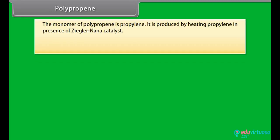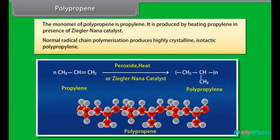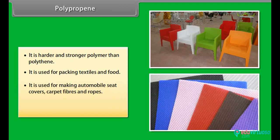Polypropene: the monomer of polypropene is propylene. It is produced by heating propylene in the presence of Ziegler-Natta catalyst. Normal radical chain polymerization produces highly crystalline isotactic polypropylene. It is a harder and stronger polymer than polythene. It is used for packing textiles and food, for making automobile seat covers, carpet fibers and ropes, and for making water pipes and washing machine parts.